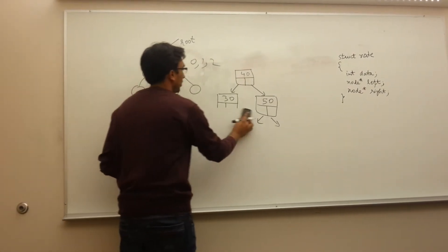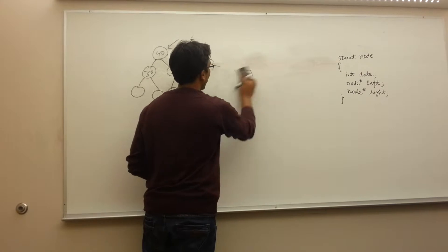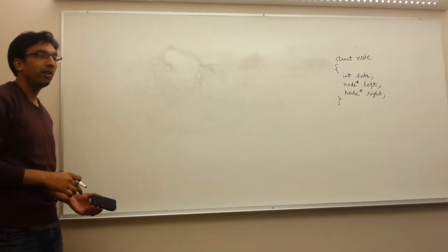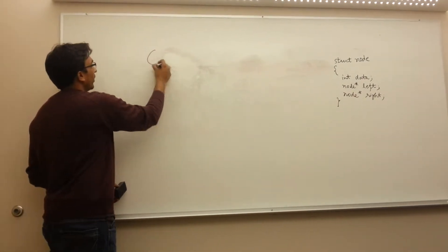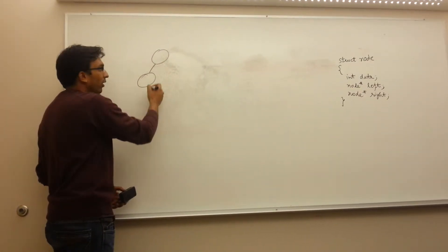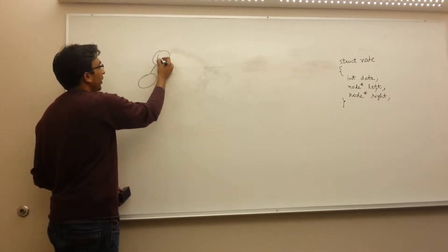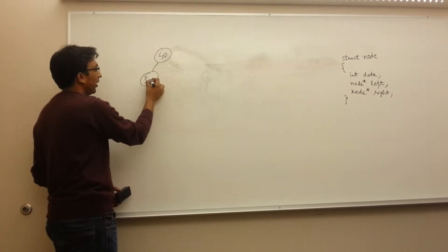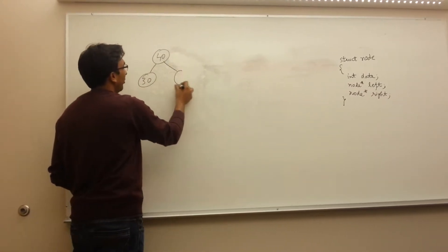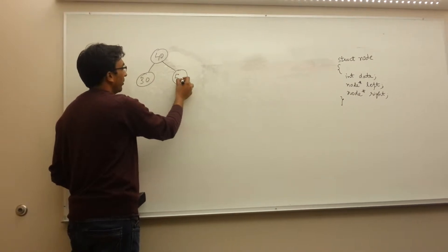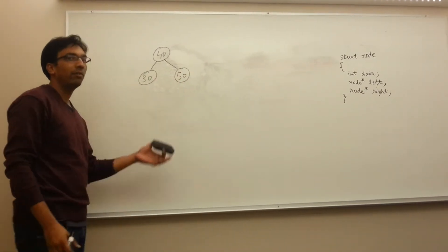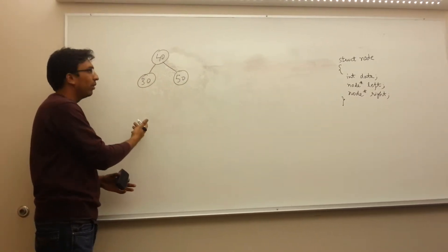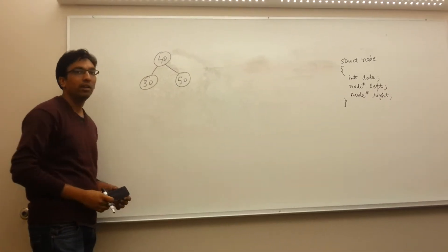Now what is a binary search tree? A binary search tree is a special case of binary tree in which the left child of a node will be smaller than the node. For example, if 40 is our node, then its left child will be smaller than 40, like 30, and its right child will be larger than 40, like 50 or something greater. If you follow this property for every node, then it will represent a binary search tree.